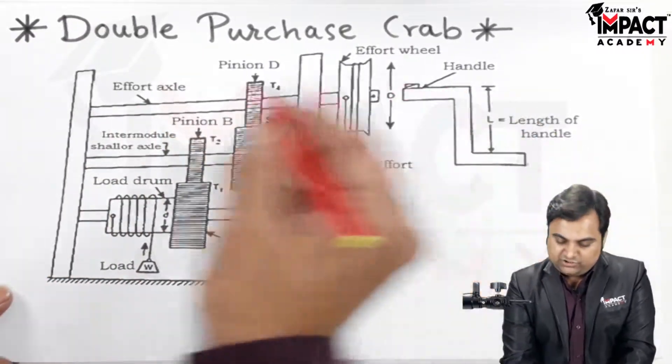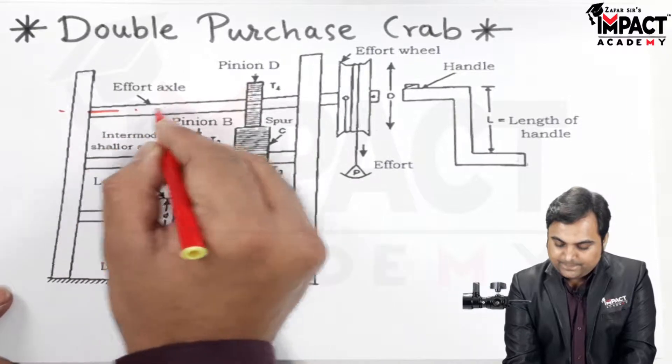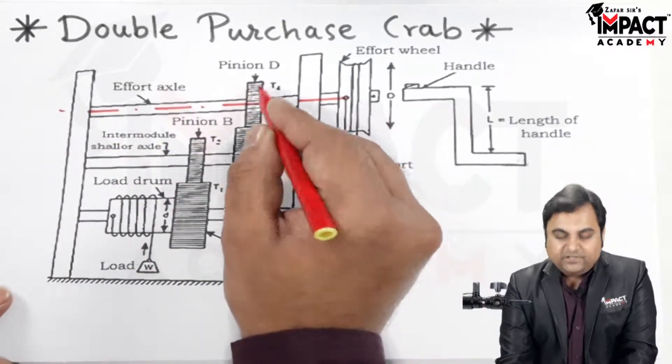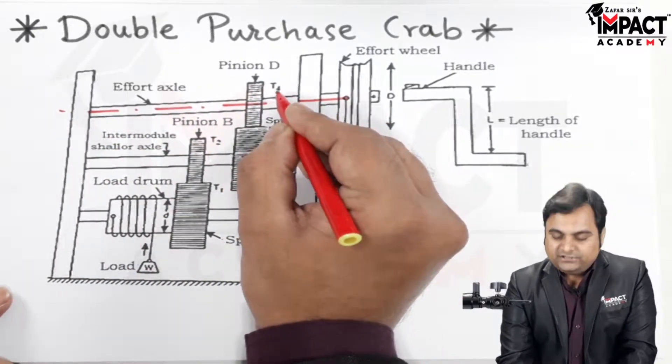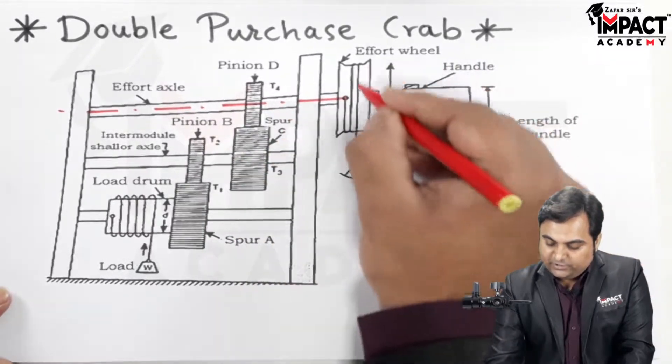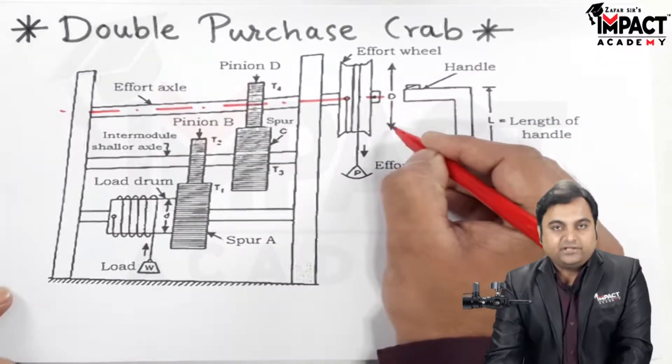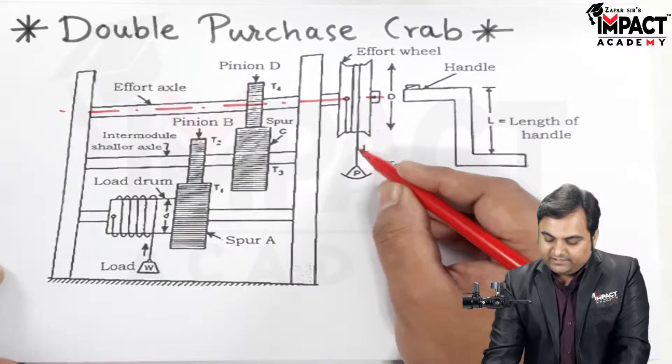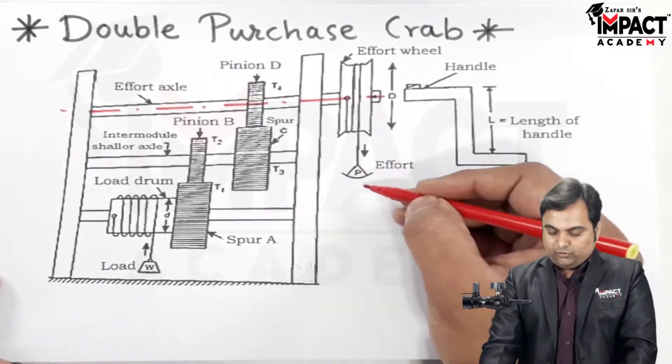Here there is a shaft which is called the effort axle. It is carrying a pinion D having number of teeth t4, and this shaft is connected to an effort wheel having diameter capital D. We would be applying the effort at the end of this effort wheel by pulling the rope.